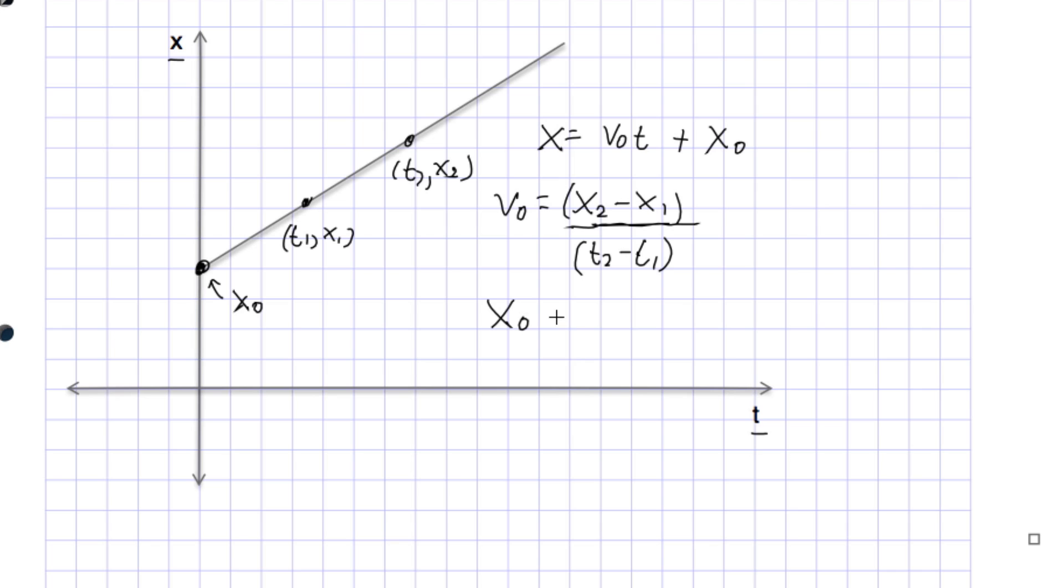x naught actually corresponds to the initial position of the car. And that may not be zero on the ruler, because zero on the ruler is right here.